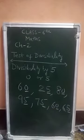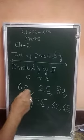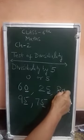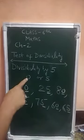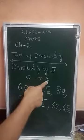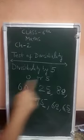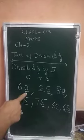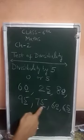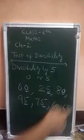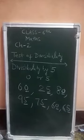You have to check only the 1's place. If at the 1's place of any number there is 0 or 5, then that number is divisible by 5. You can see that in all those numbers we have 0 or 5 at 1's place, so they are all divisible by 5.